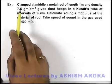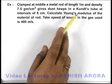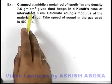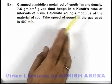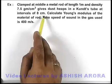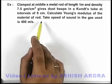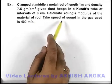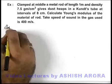In this example, we are given that a metal rod clamped at middle, of length 1 meter and density 7.5 gram per centimeter cube, gives dust heaps in a Kundt's tube at an interval of 8 centimeter. We are required to calculate the Young's modulus of the material of rod, and it is given that the speed of sound in the gas used in the Kundt's tube is 400 meters per second.